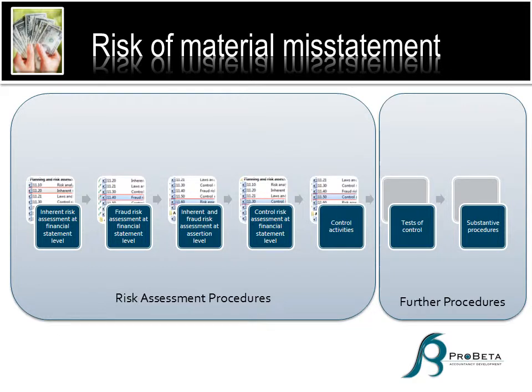If I can just run through those blocks briefly: the first box is inherent risk assessment at financial statement level. Then we do the fraud risk assessment at financial statement level. Then we do both inherent and fraud risk assessment but at assertion level — that's the third box. Then we move on to control risk at the financial statement level, and then control activities, which is essentially your control risk assessment at the assertion level. So those are your risk assessment procedures.